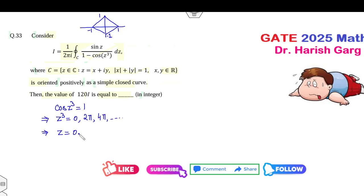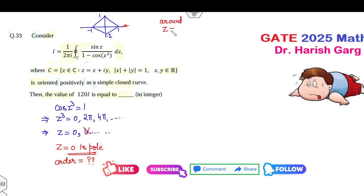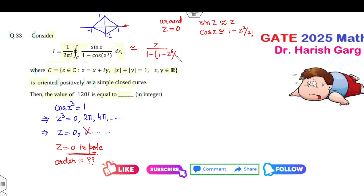That gives z = 0. When you take the cube root, the other values are something greater than 1 and lie outside the region. So z = 0 is the pole. Now the question is: what is the order of this pole? Around z = 0, sin(z) ≈ z and cos(z) ≈ 1 − z²/2!. So the expression becomes z over (1 − z⁶/2!), which simplifies to 2/z⁵. Therefore the order of the pole at z = 0 is 5.